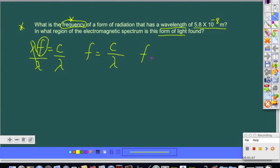Take a look at what we're given. The speed of light is 3.00 times 10 to the eighth meters per second, and that's a constant we always know. Divide that by the wavelength of this form of radiation, which we have been given in our problem to be 5.8 times 10 to the negative eighth meters.